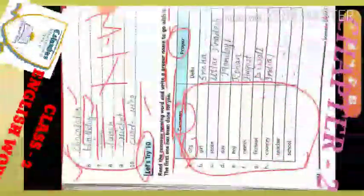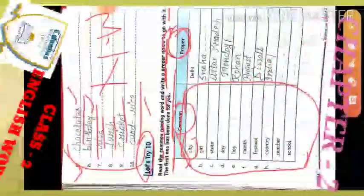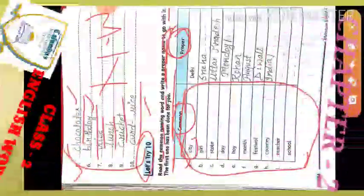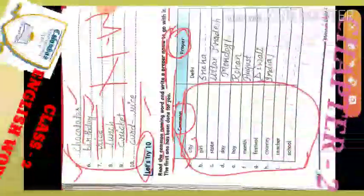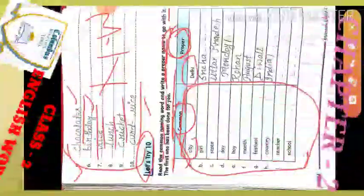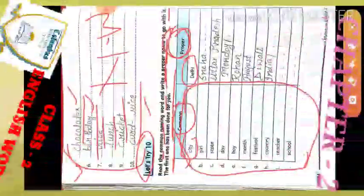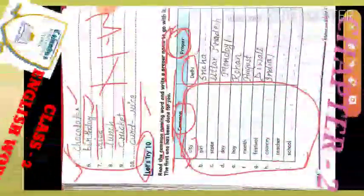The first word is 'city' — city is in common noun, as it refers to no specific city. But in proper noun, we write a specific city name, like Delhi, Mumbai, Calcutta — whichever city you want to write, you can write it. Next, 'girl' — you will write a girl's name in proper noun. I have written a name here, but you can write your own name, your sister's name, or any other girl's name.